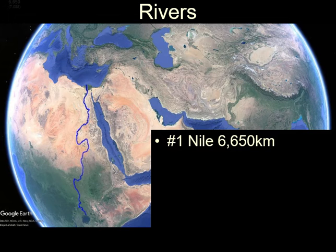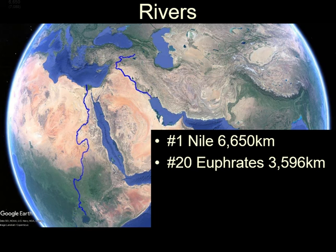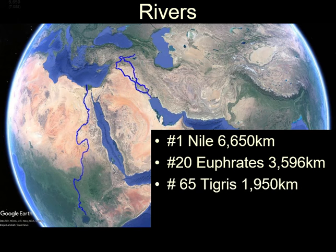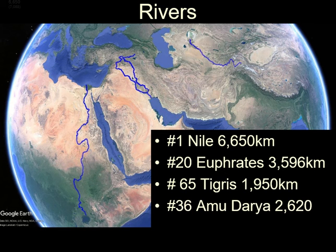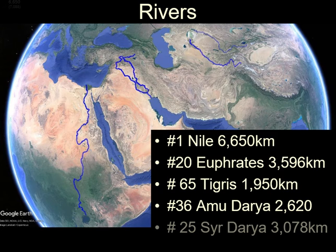It so happens in the Middle East we have some very big rivers. The Nile, for instance, is the biggest river in the world at over 6,000 kilometers. Then there's the Euphrates at over 3,000 kilometers, and the Tigris at just below 2,000. There's also the Amu Darya, sometimes called the Oxus, and the Syr Darya — some of these are very big rivers. They come from places where there is rainfall.